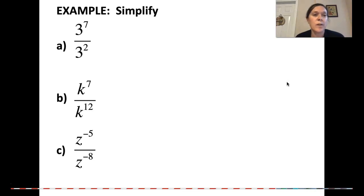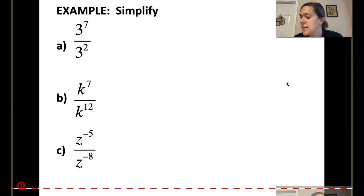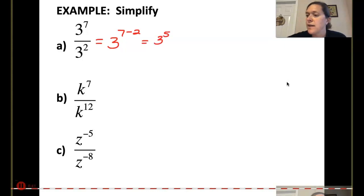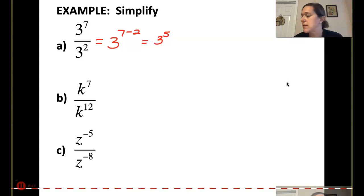Now let's do some quotient rule work. Here we have 3 to the 7th all over 3 to the 2nd. Since I have the same base, we're just going to do 7 minus 2, which is 5. So 3 to the 5th, which is 243.